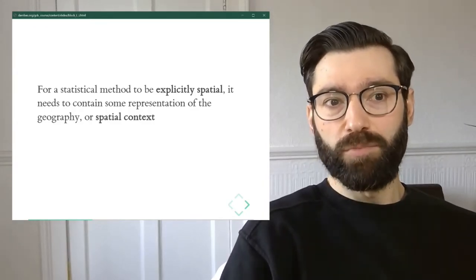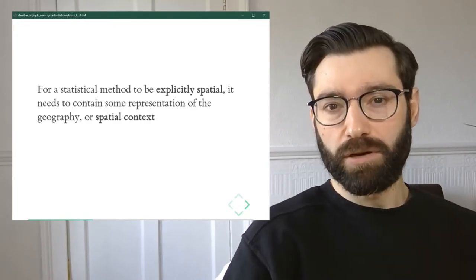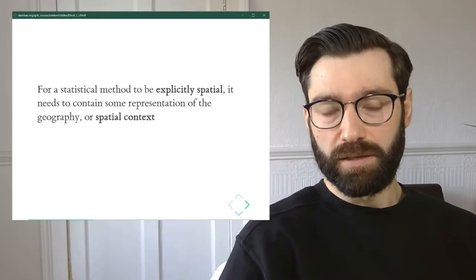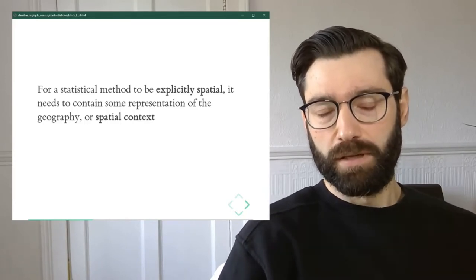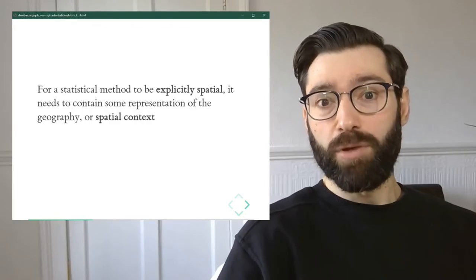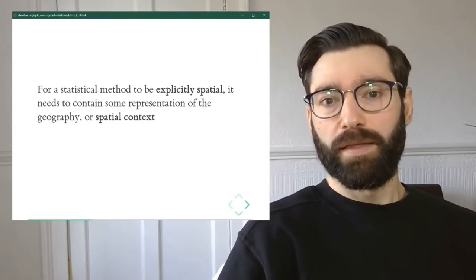For a statistical method to be explicitly spatial, or in other words to treat space and geography as a first-class citizen, as something that is considered at the very core of the method, the statistics need to have a representation of geography that is expressed in a form that can be understood.